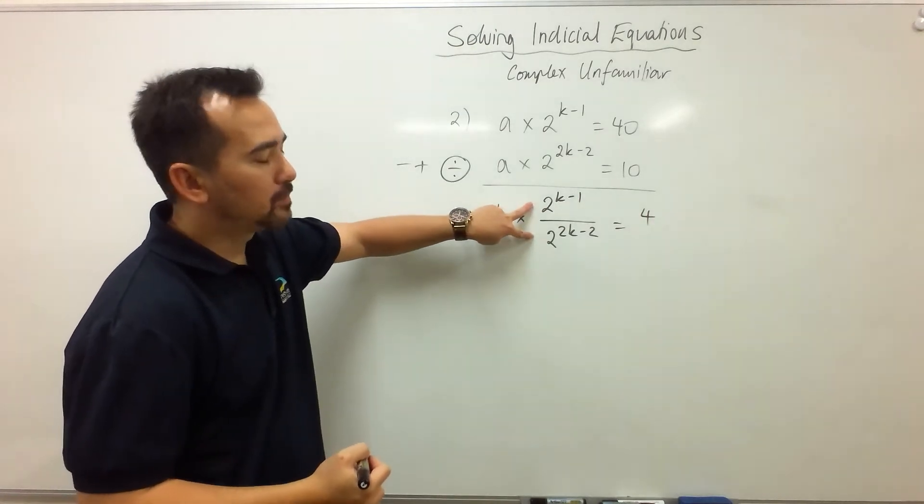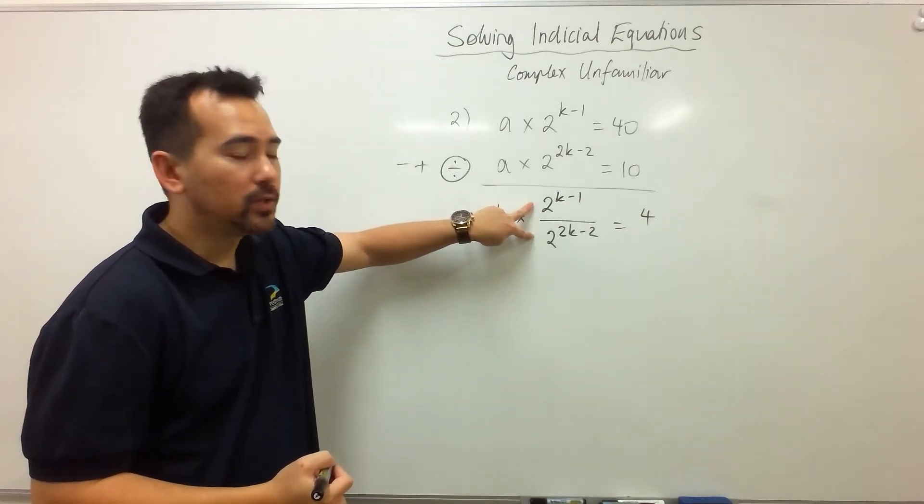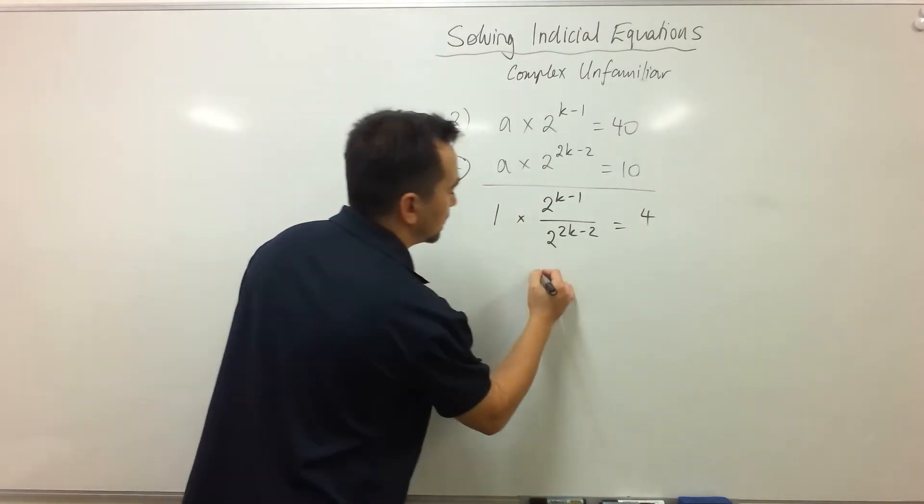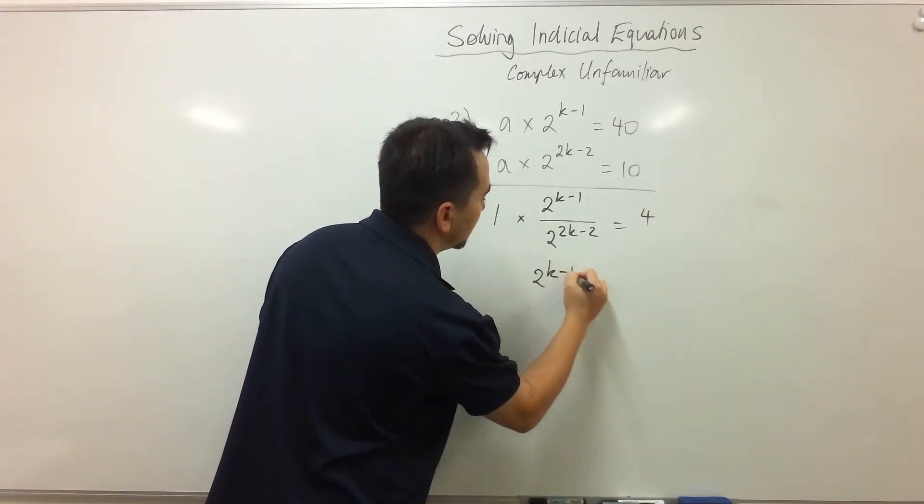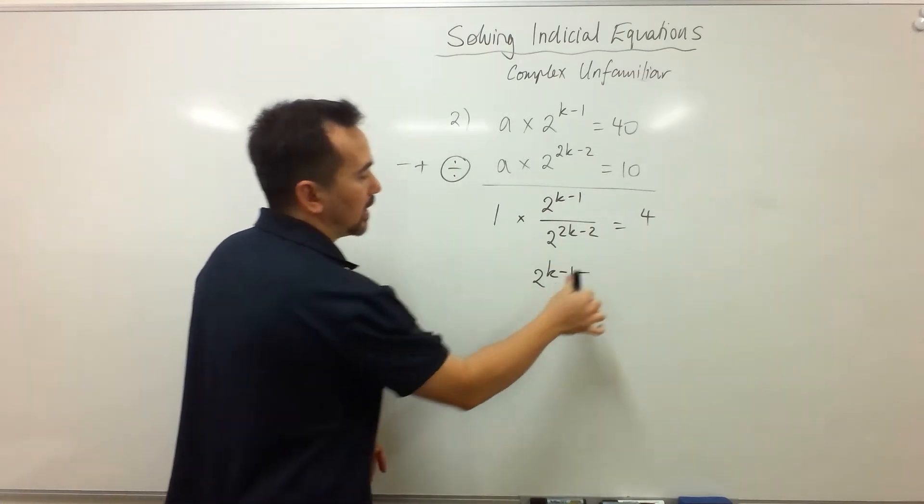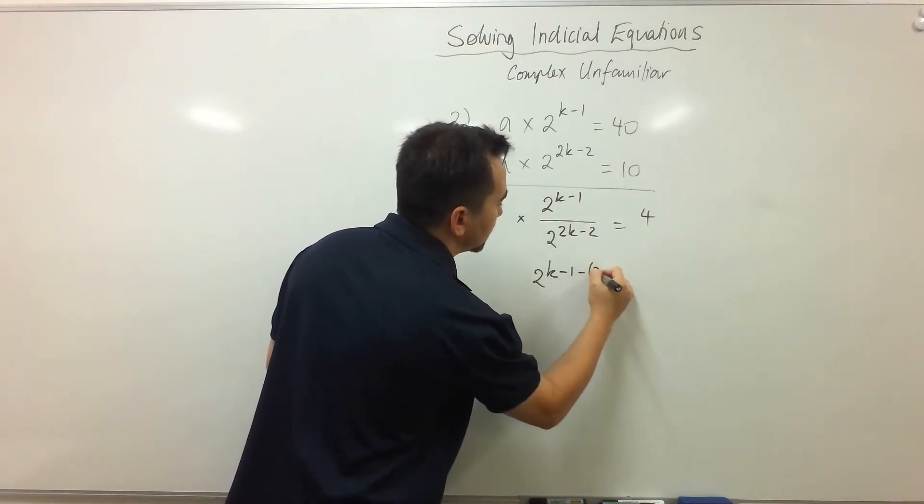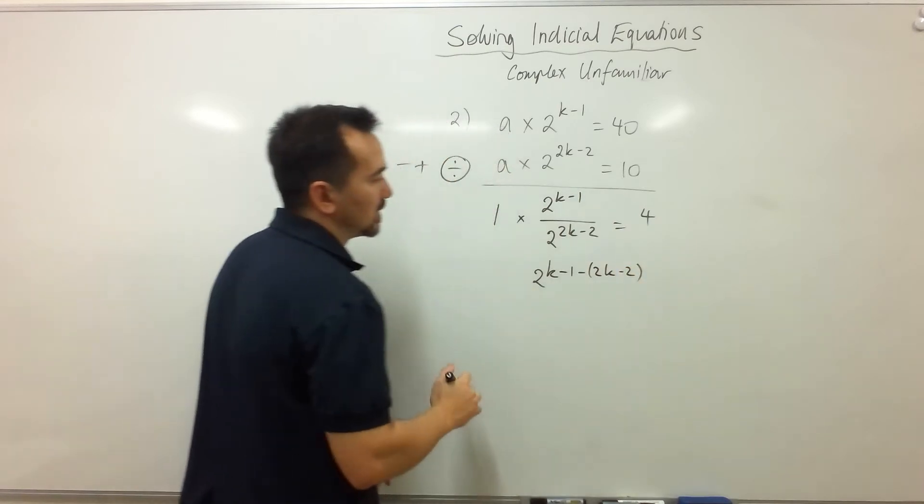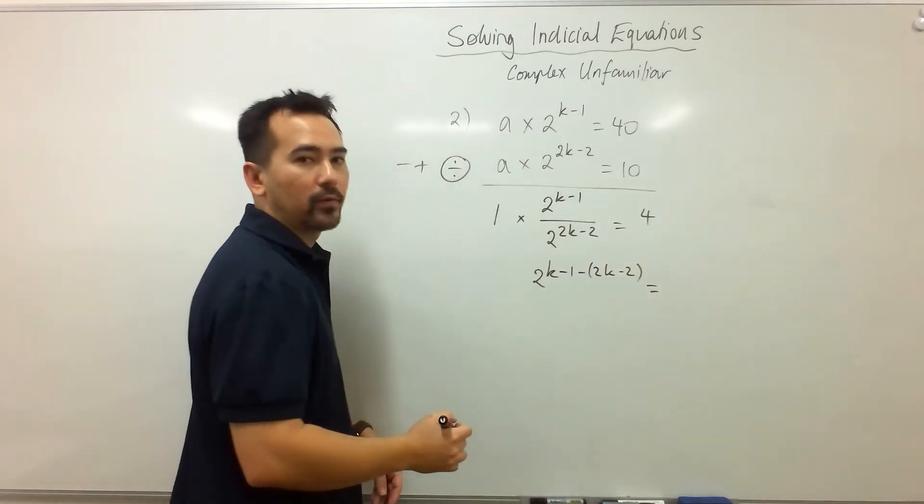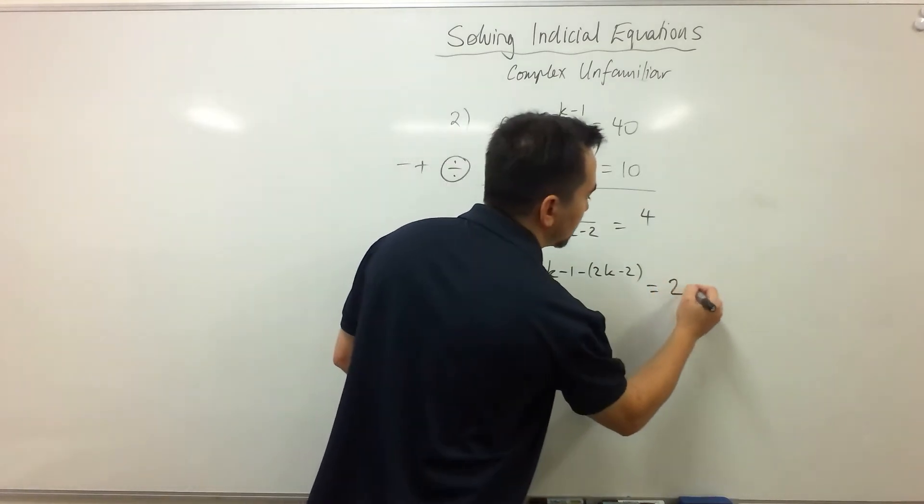Over here since my base are both in 2, I can move my denominator into my numerator. So I have 2k take 1, and then I have to subtract this power and make sure you use brackets because that's going to affect this negative right there. And this is equal to 4, and I can write 4 in base 2 as well.